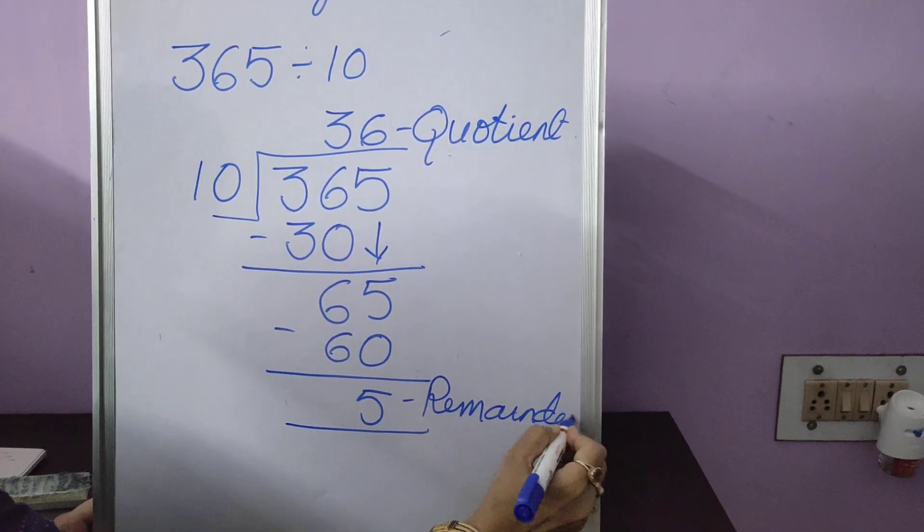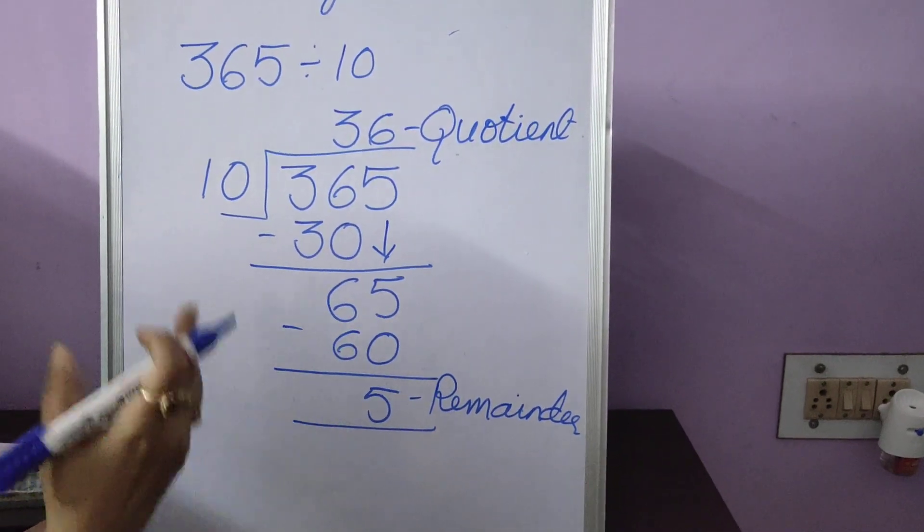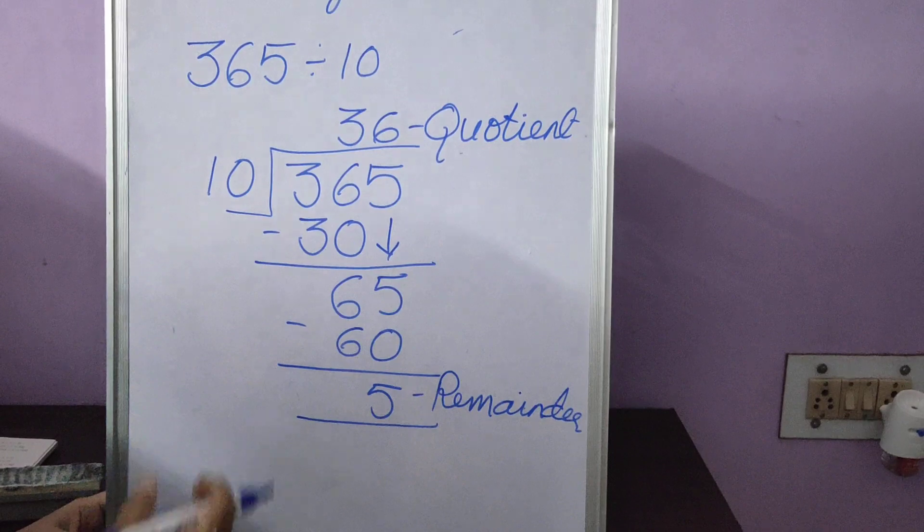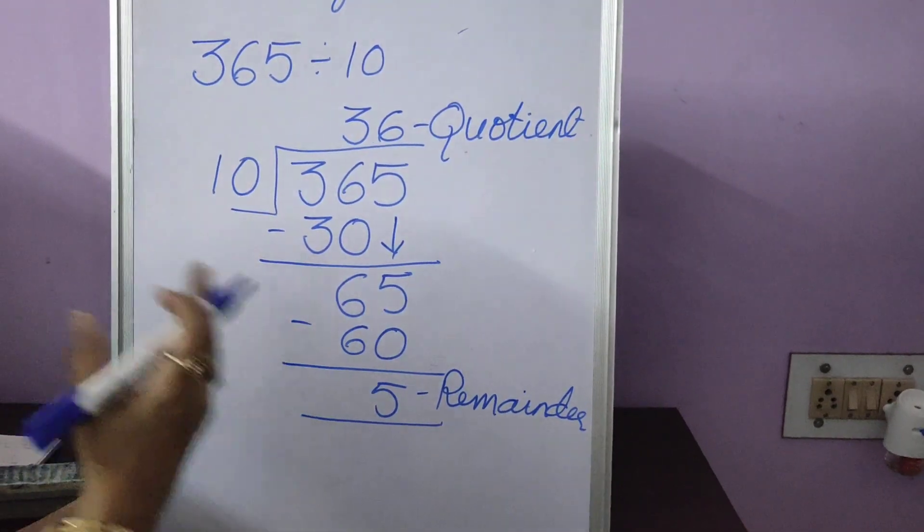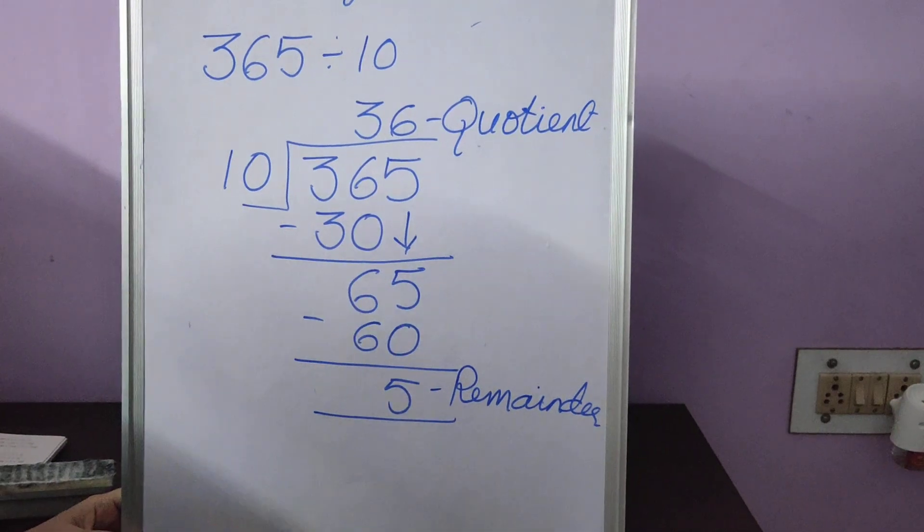In the same way, if you have to divide by 100, you will use the tables of 100: 100, 200, 300. If you have to divide by 1000, you will use 1000, 2000, 3000, so on and on using this long division method.